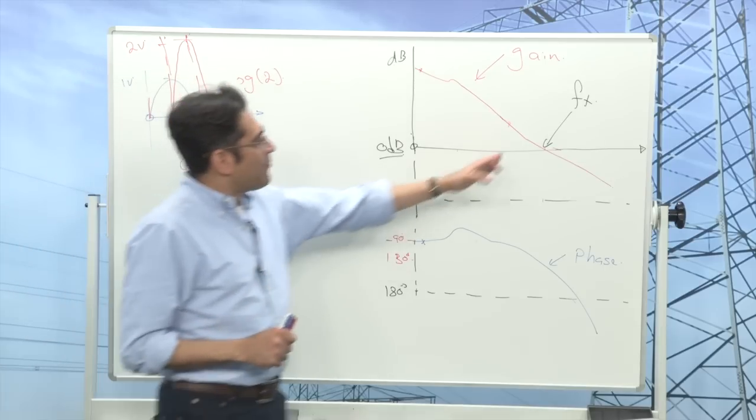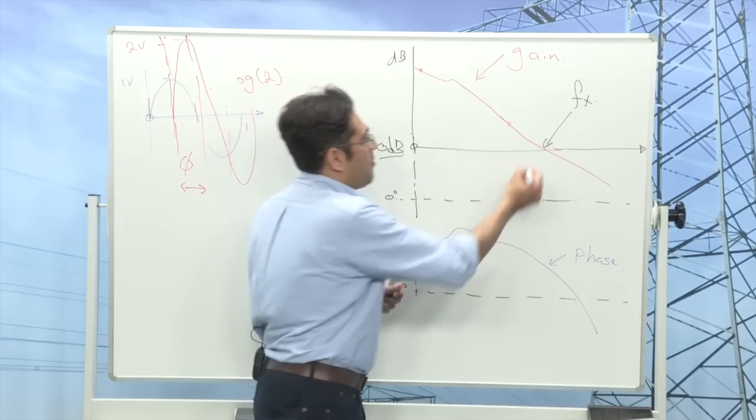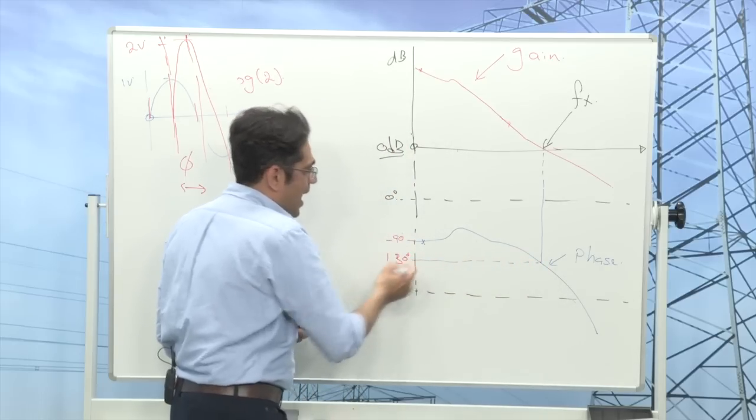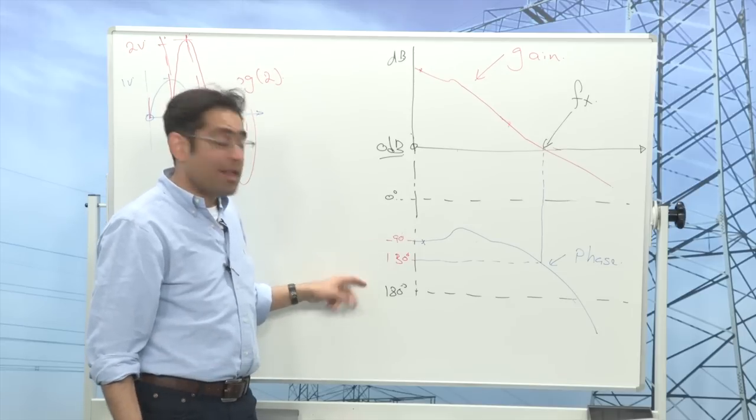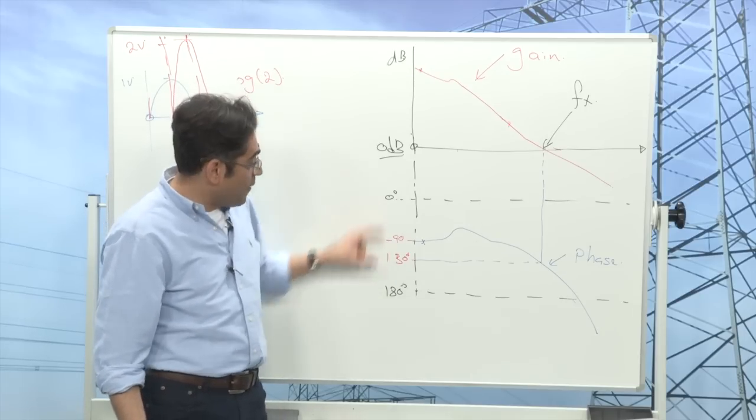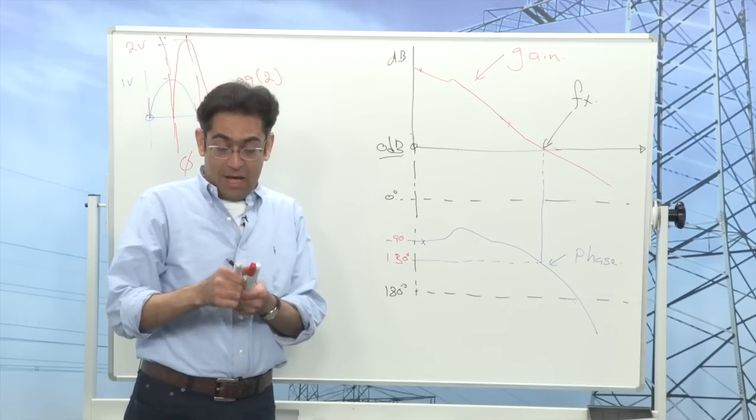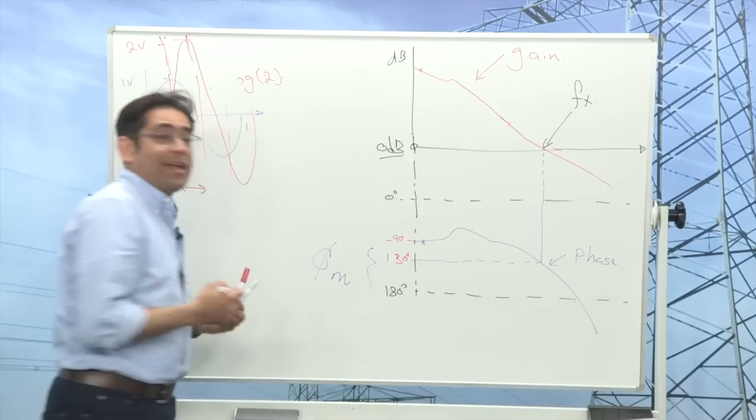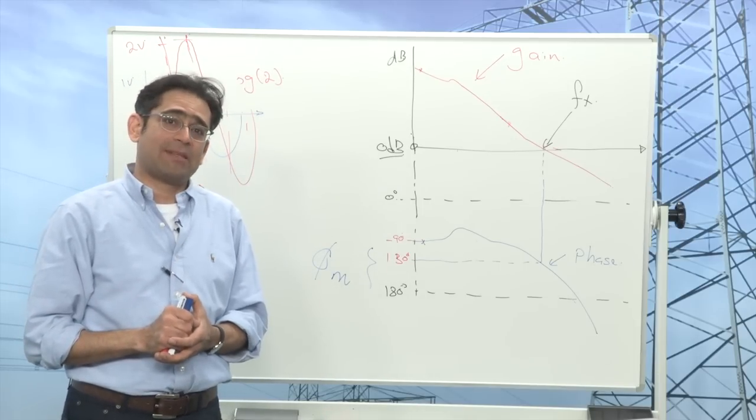Now when I have got my crossover frequency, I can draw a straight line from my gain plot down to my phase plot and I look at how much the phase is above 180 degrees. In my case it happens to be 130 degrees of phase, which means that I am 50 degrees above the 180 degree point and that is called the phase margin. Phase margin is very very important when assessing the relative stability of the power supply.